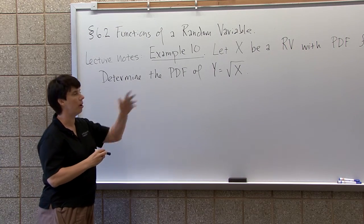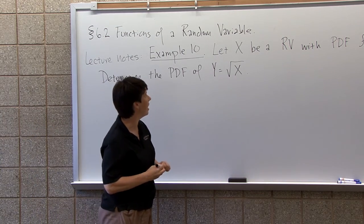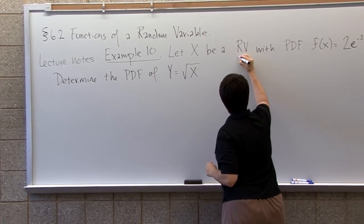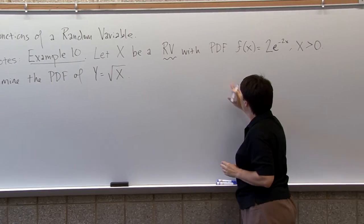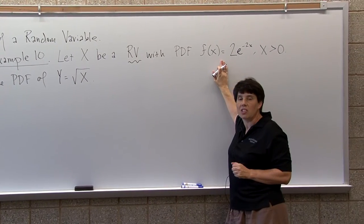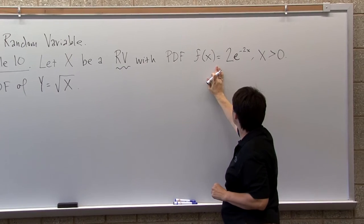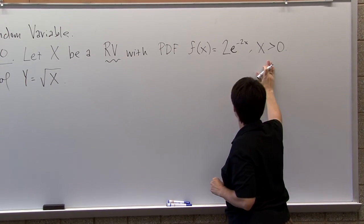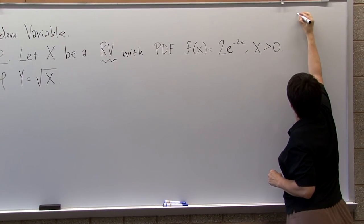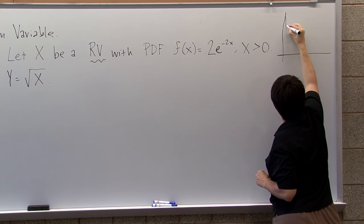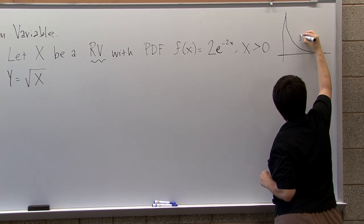So this is example 10. X is a random variable. So assume x is a random variable. It's a probability density function, that's your little f of x is 2e to the negative 2x for x bigger than 0. So the picture of this guy kind of looks like this. Here's my f of x.